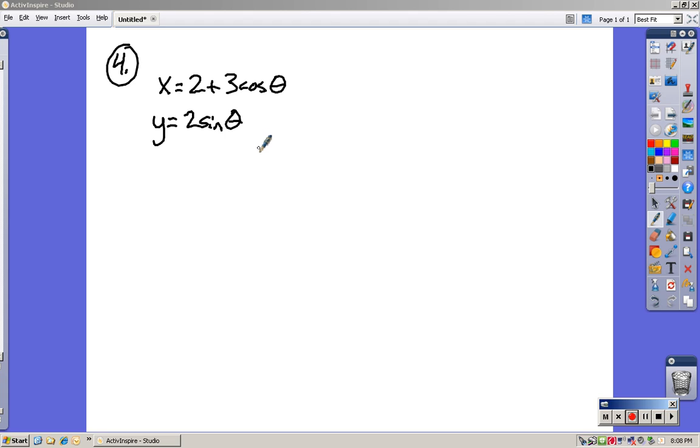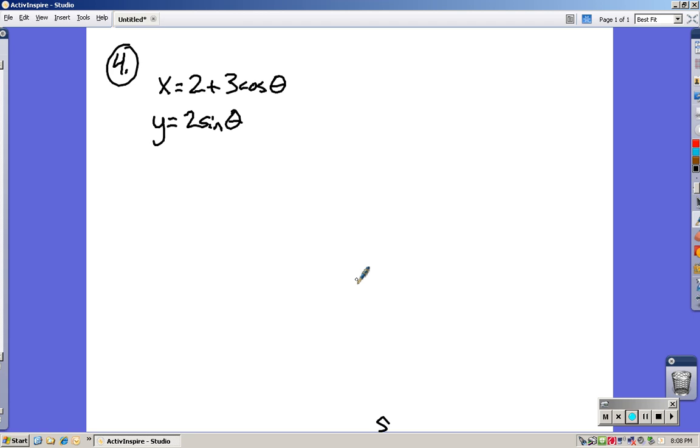Sometimes when I solve these, I'll try and solve for the variable and substitute it into the other one. But in this case, I see both sine and cosine. So I'm going to take advantage of that Pythagorean identity that I know that says sine squared plus cosine squared is one.